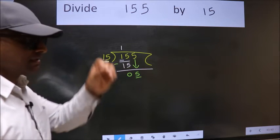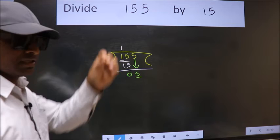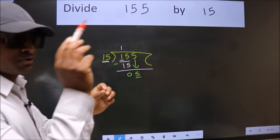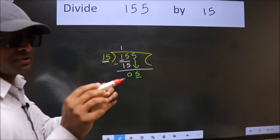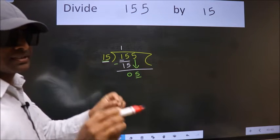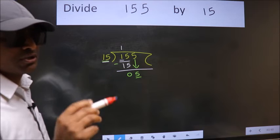I repeat: bring down the number and also put dot, take 0. Bring down the number and put dot, take 0. Both at the same step, you should not do.